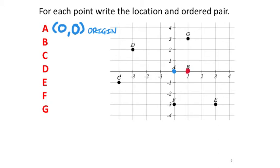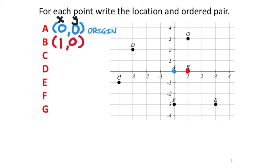Point B is just to the right of point A and on the x-axis. Its x value on the number line is 1. Following the line over to the y-axis, the y value is zero. So point B is at (1, 0) — it's right on the x-axis.